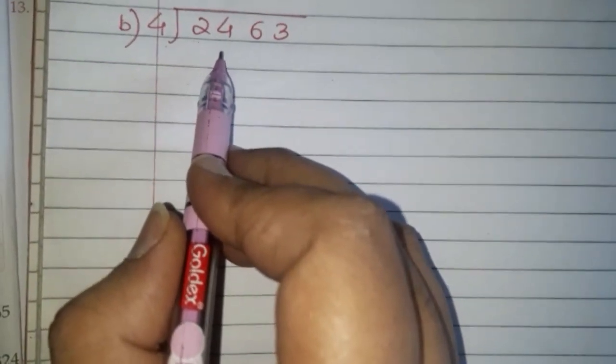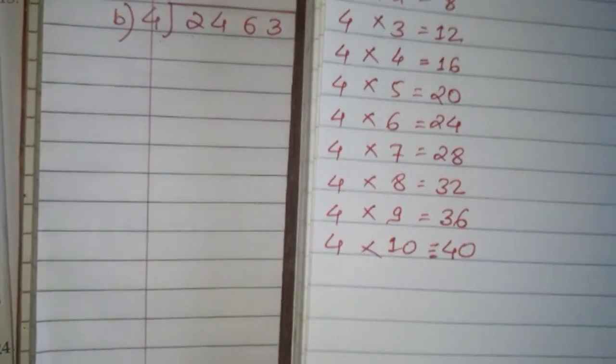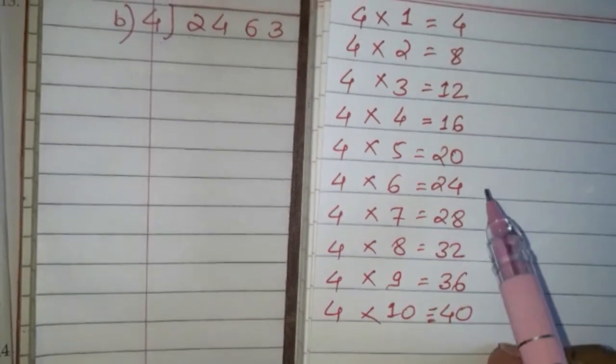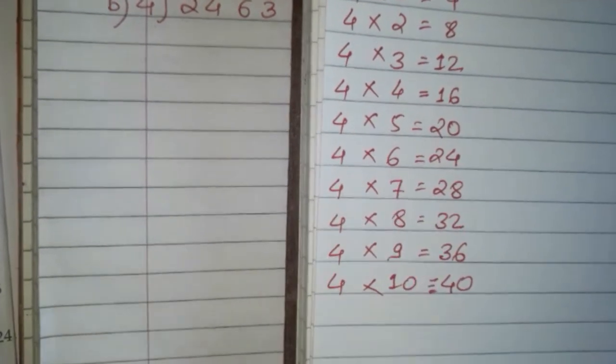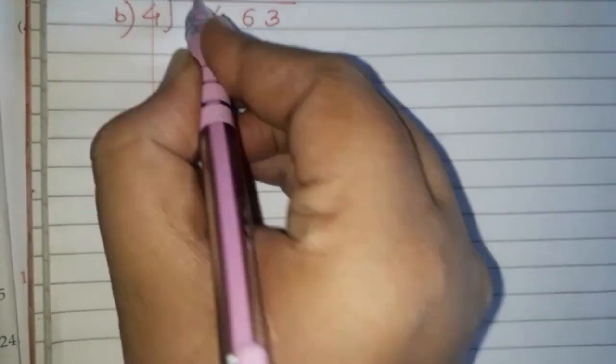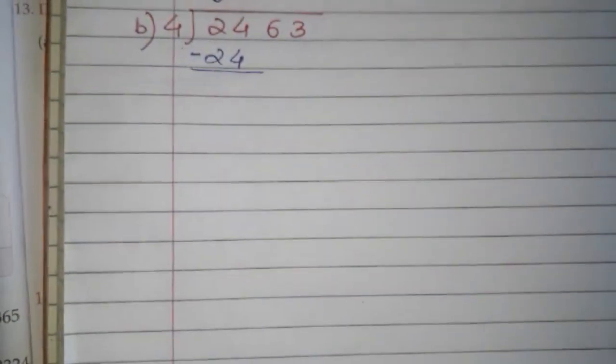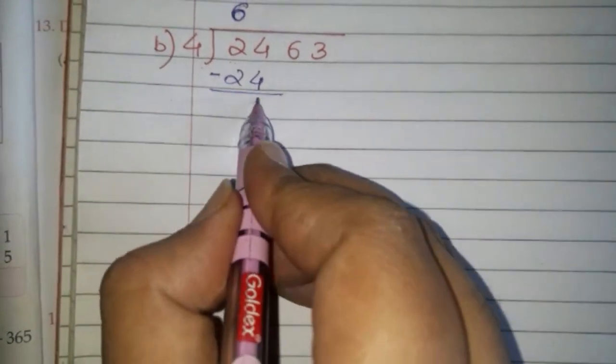We cannot divide 2 by 4 because 2 is smaller than 4. So we take the next number along with it — we take 4 to get 24. We check if 24 is in the table of 4 — yes, 24 comes 6 times. So 4 sixes are 24; we write 6 and subtract.